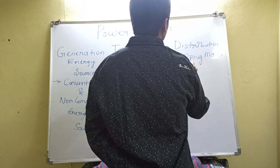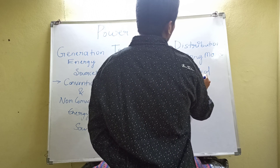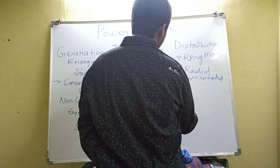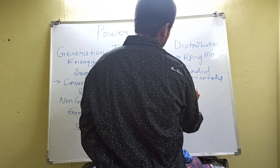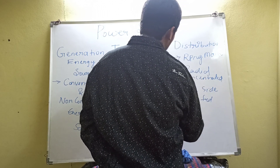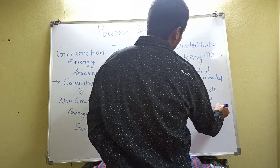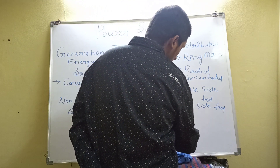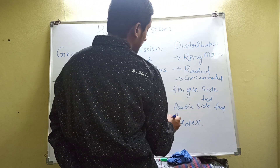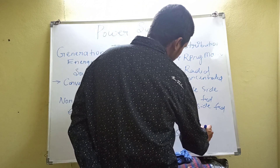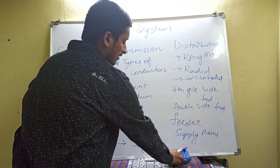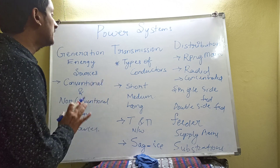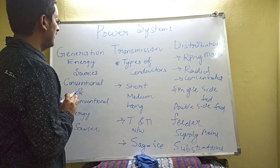In distribution, we will have ring main, radial, and concentrated distribution systems as the major focus. After that, we will cover single-side-fed and double-side-fed distribution systems. We will also look at the difference between a feeder and supply mains, and we will cover substation distribution as well.